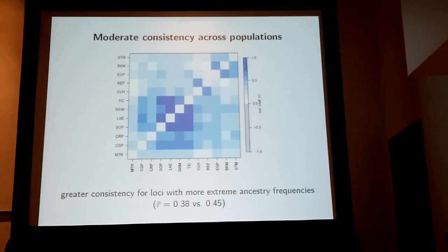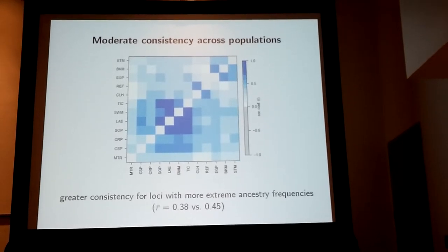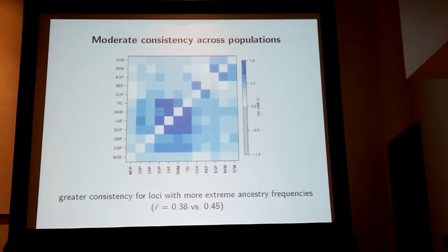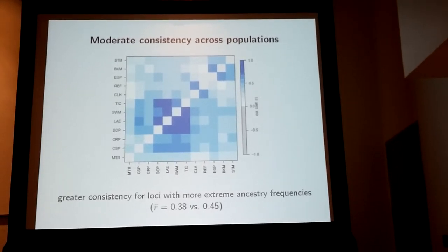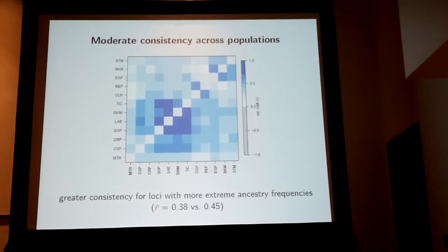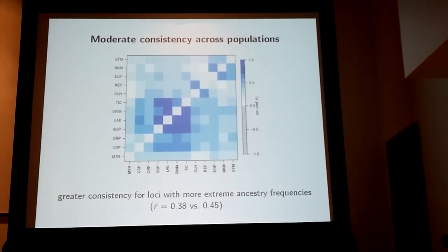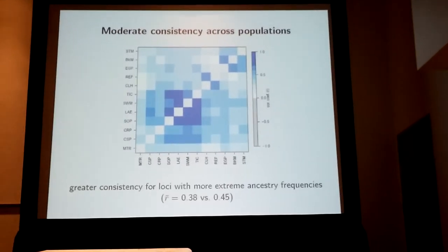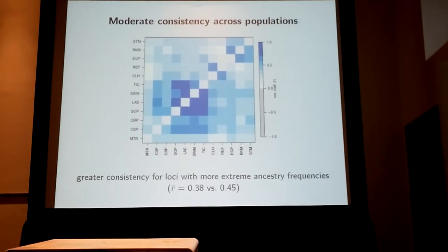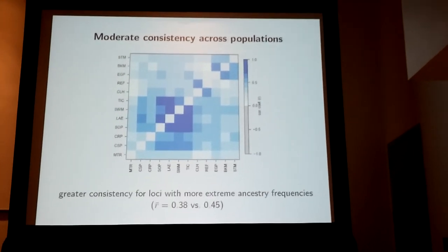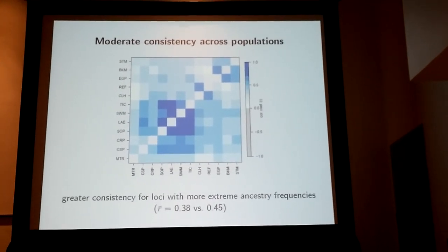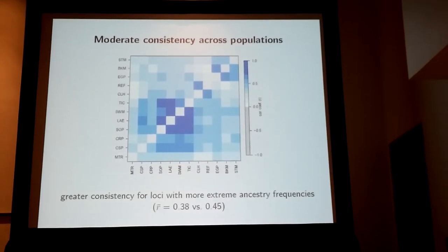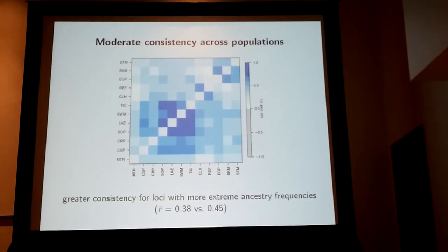In terms of consistency, looking at the correlation in locus-specific ancestry frequencies between all 12 pairs of populations: on average, there's moderate consistency in ancestry frequencies with a correlation of about 0.38. As shown in the upper triangle of that plot, there's also a geographic component — nearby populations have more similar ancestry frequencies. If you look only at loci where you have exceptionally high or low ancestry frequencies in a given population, the ancestry correlations actually go up, as shown in the lower triangle. So things most different from the genome average are more consistent.